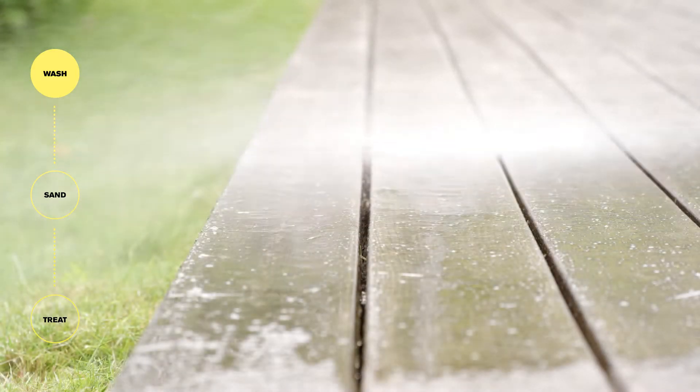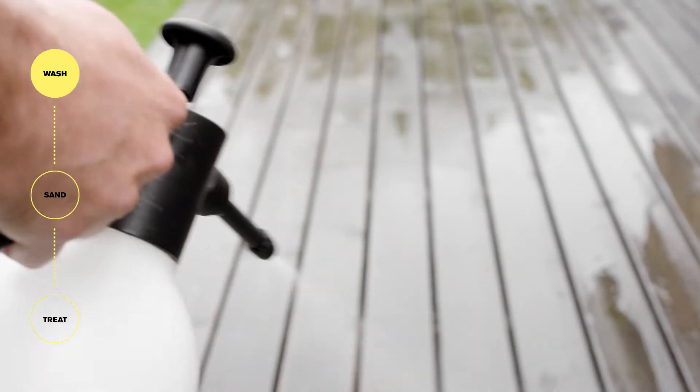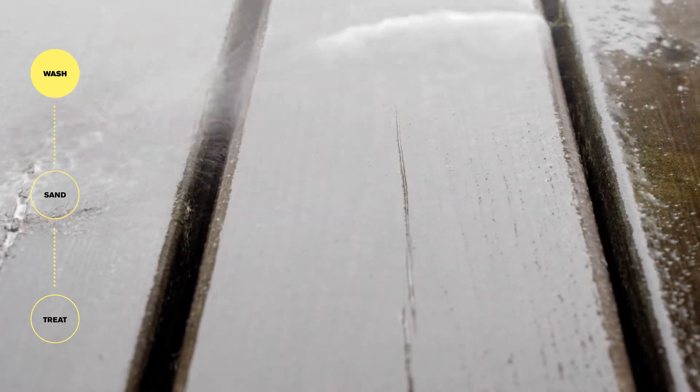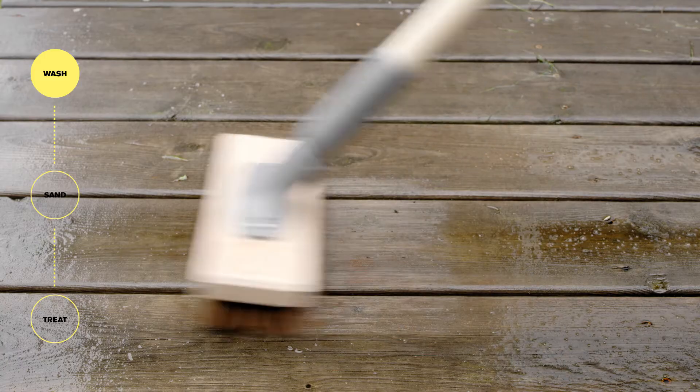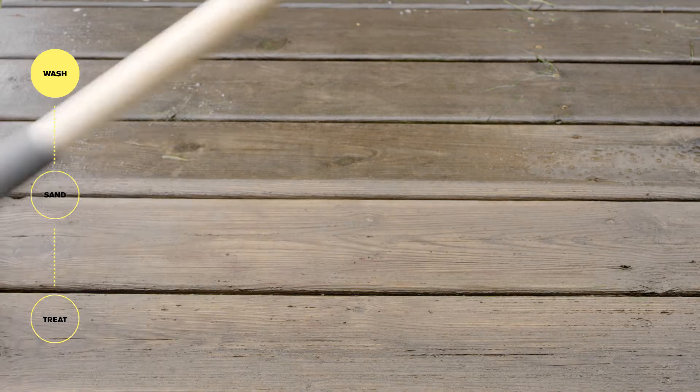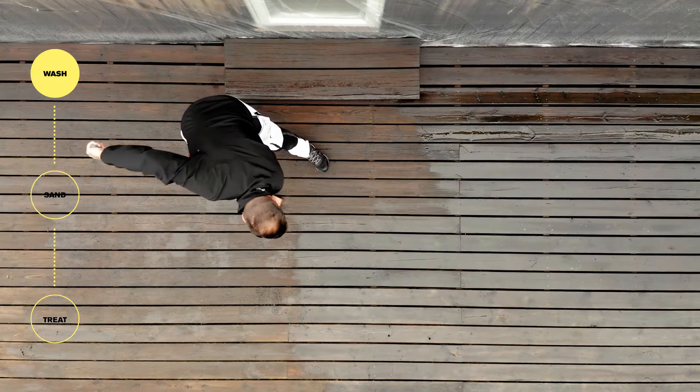Too high pressure can damage the surface. Apply the terrace detergent evenly onto the wet wood. Scrub off dirt and old oil with a terrace brush. The wood needs to be really clean.